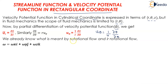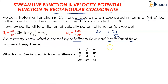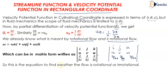We have already learned about rotational and irrotational flow. Omega is equal to ω_x·i + ω_y·j + ω_z·k. In matrix form, this is written with rows i, j, k; u, v, w; and ∂/∂x, ∂/∂y, ∂/∂z. This equation is used to find whether the flow is rotational or irrotational.